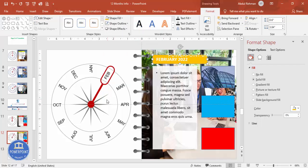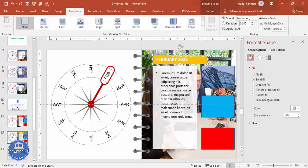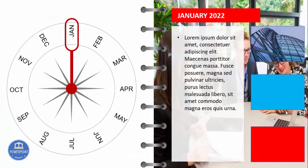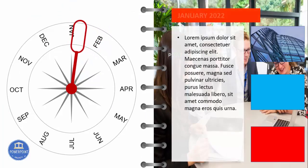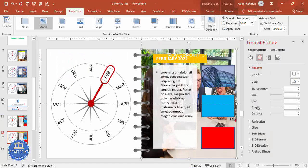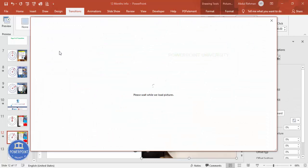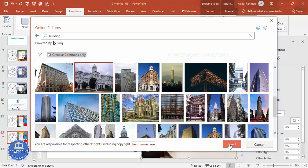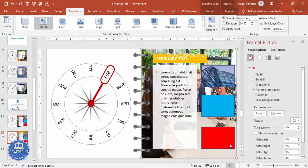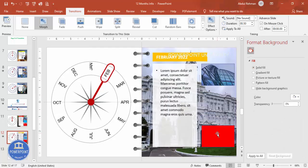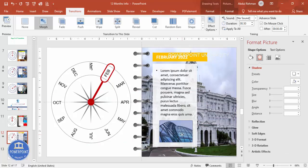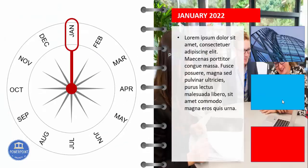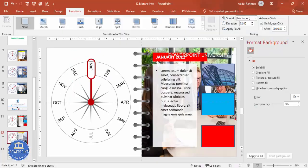Now you have two options for transitions. Go to Transitions and select Morph — you'll see it animates smoothly. To make it quicker, reduce the duration to 0.5 seconds. For example: this is January, click and it changes to February. You can also change the background image for each month by searching for a different image. This is one way of doing the animation.